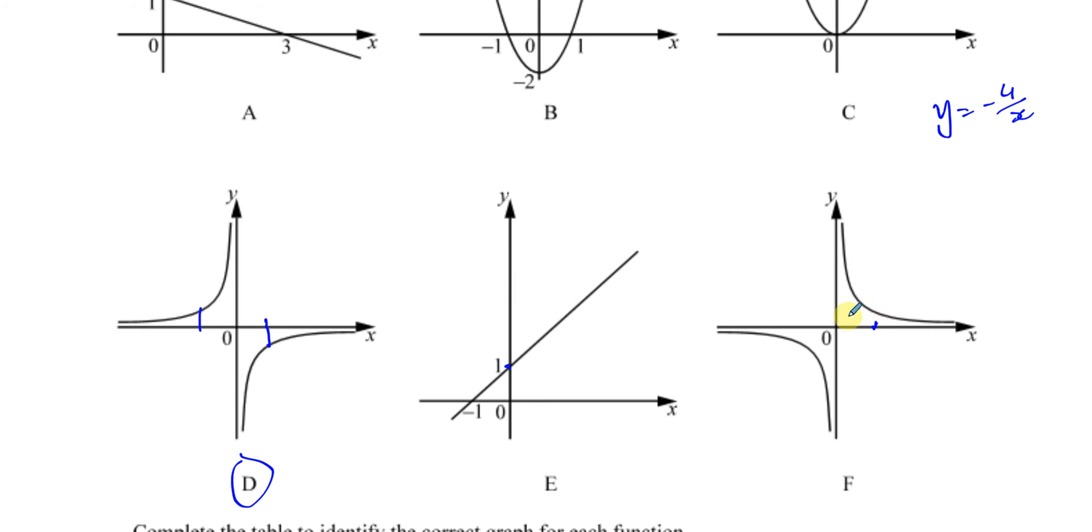When x is 1, y would be 1 as well. When x is 1, y would be -4. So when x is 1, y is not positive, it's negative, so it can't be this one. It must be that one. When x is 1, y is -4. When x is -1, y is 4.